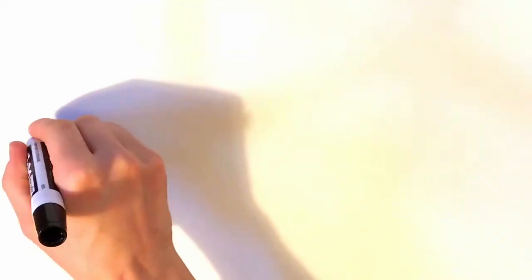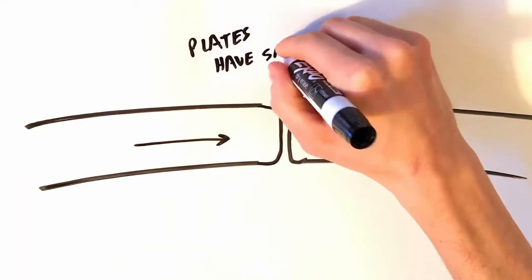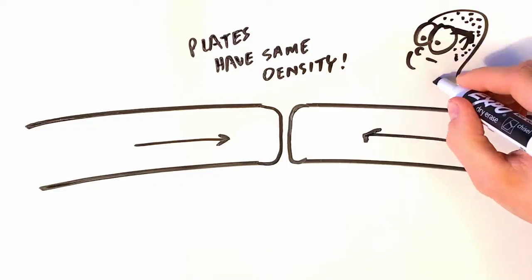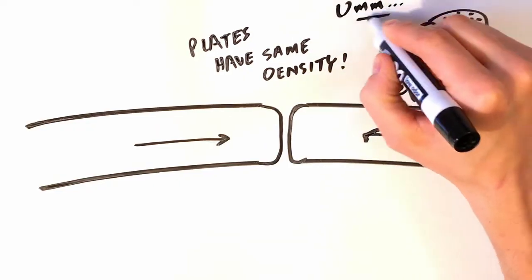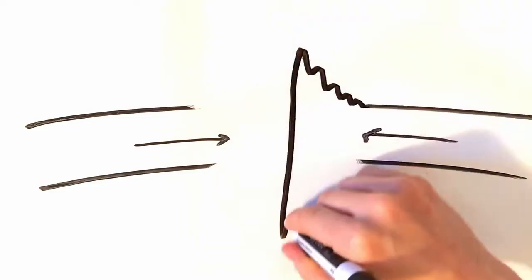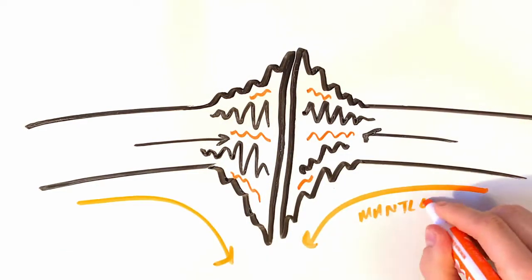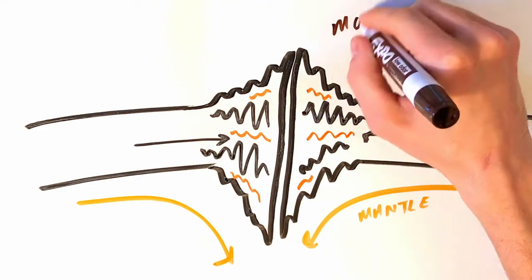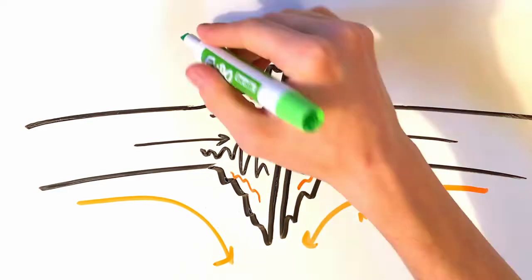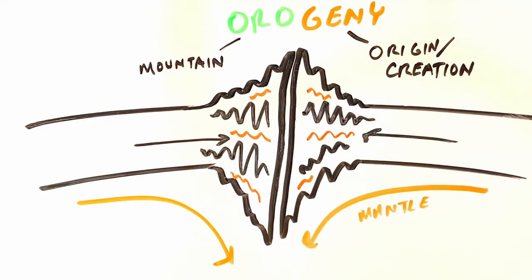Now up to this point, we've assumed that one of the plates is denser than the other. But what if that's actually not the case and the plates have the same density? We know that the denser plate is going to subduct. So if they have the same density, neither one can do that. So what they do is they sort of bunch up in this sort of accordion shape. And we experience that as mountains. And you might hear this called kind of an unusual word. It's orogeny. Orogeny means mountain and geny means origin or creation.